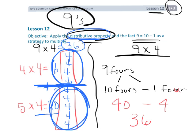So we have two different ways to show that 9 times 4 is 36. You have the distributive property here, and you have this concept that 9 is 1 less than 10. So let's get started with some practice.